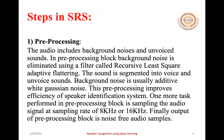We will go through each step in detail. The first step is preprocessing. Audio generally includes background noise — unvoiced sounds and noises from backgrounds that are not required. In the preprocessing block, these background noises are eliminated using filters called recursive least square adaptive filtering. The sound is segmented into voiced and unvoiced sounds. The background noise is usually additive white Gaussian noise. This preprocessing improves the efficiency of the speaker identification system. One more task performed in preprocessing is sampling the audio signal at a sampling rate of 8 kHz to 16 kHz. The output of the preprocessing block is noise-free audio samples.